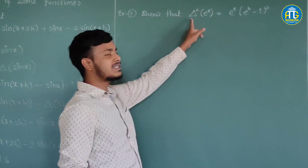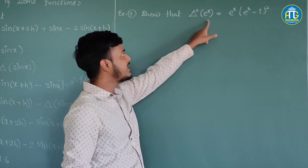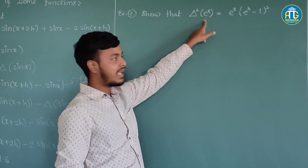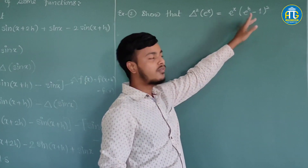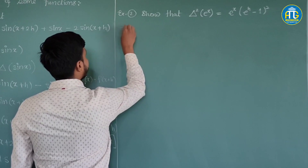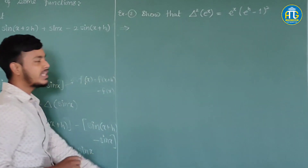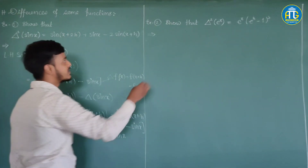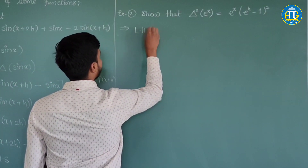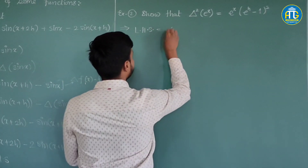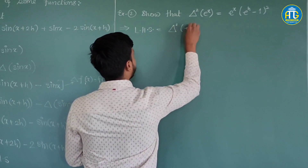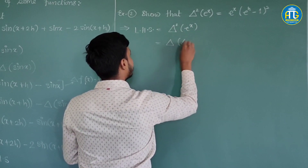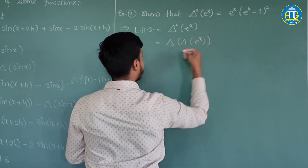The next problem says: show that Δ² of eˣ equals a certain expression. On very similar lines we can do this. We start with LHS, which is Δ² of eˣ, and we write this as the forward difference of the forward difference of eˣ.